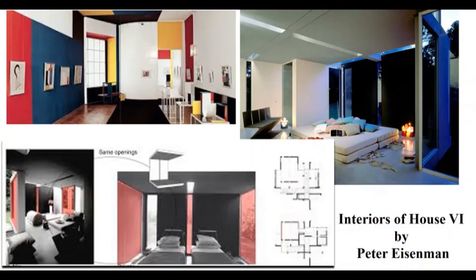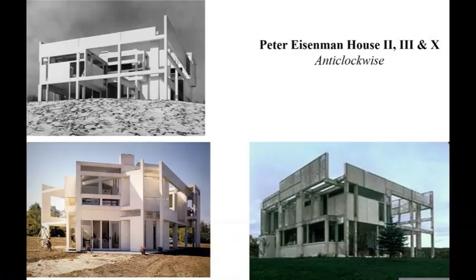In the Bauhaus, the approach was minimalistic and very functional — only functional elements were added and made very minimalistic in nature. In De Stijl, as an art and craft movement, the main emphasis was on visual aesthetics. Similarly, in the Schröder House, various elements were added to give aesthetic appeal, and similar additional decorative or aesthetic elements are given to House VI by Peter Eisenman. Here we see a series of houses designed by Peter Eisenman: going anti-clockwise we have House II, then House III, and lastly House X.